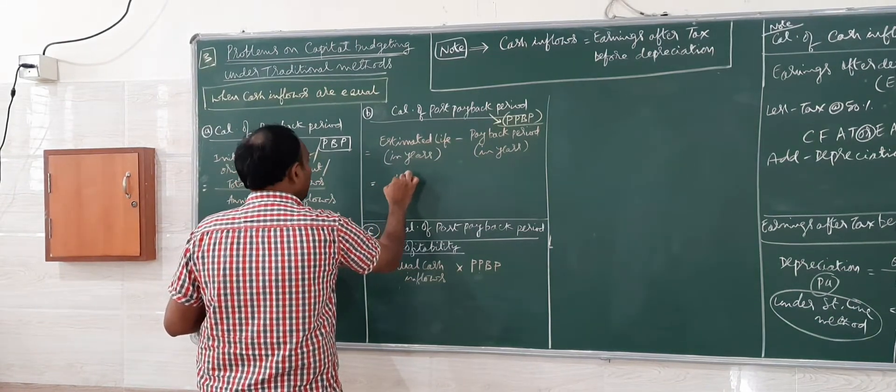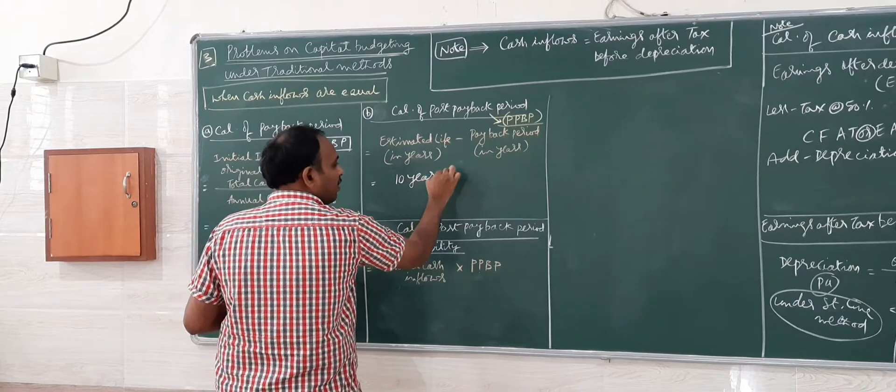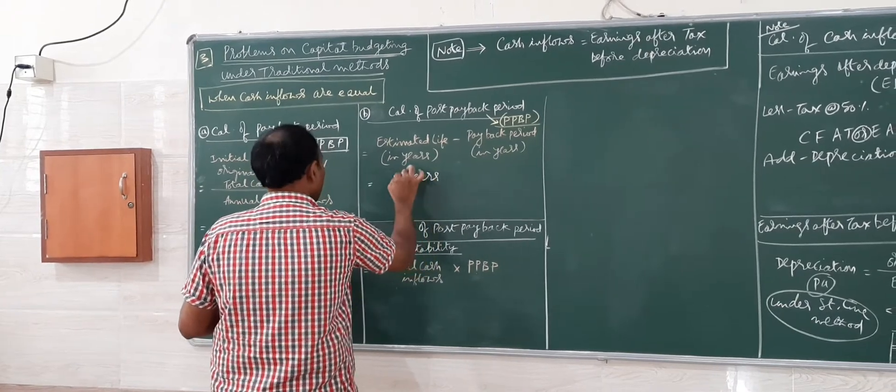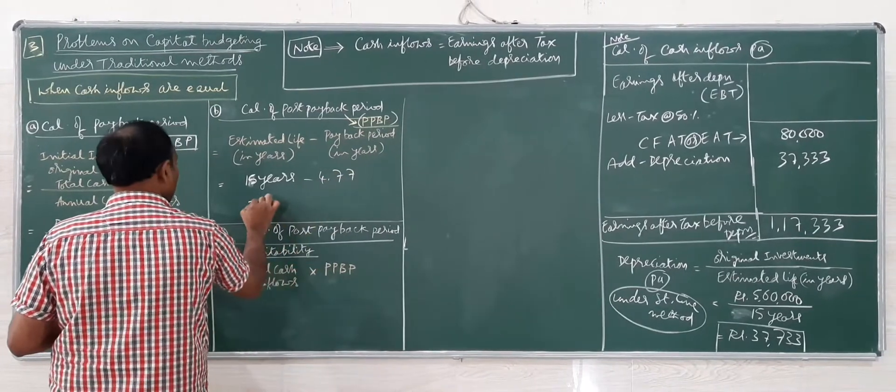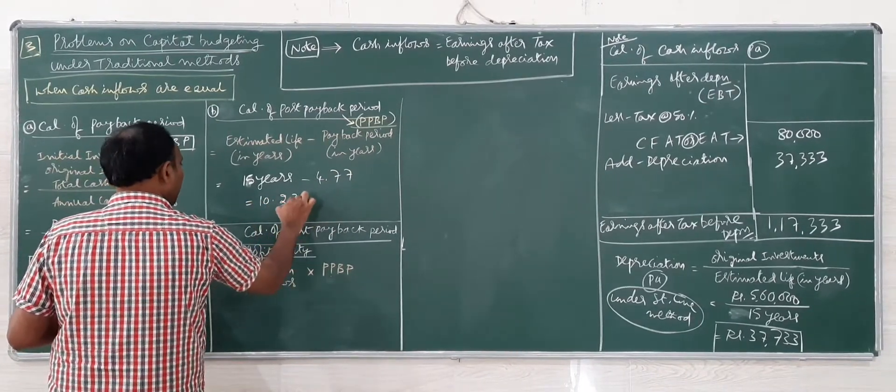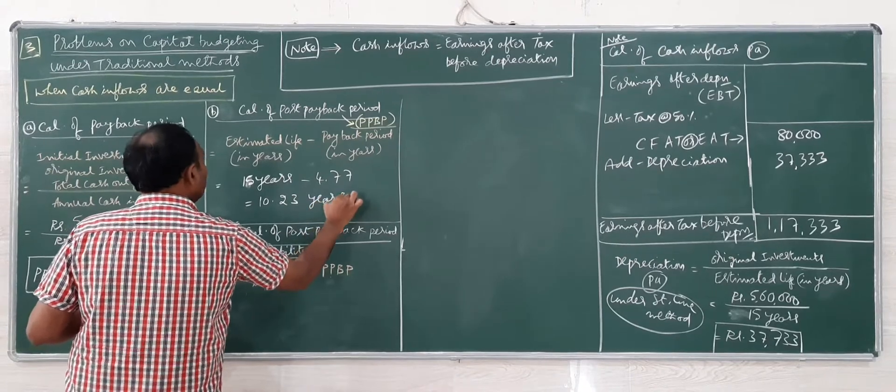Estimated life is 15 years, payback period is 4.77 years, so post-payback period comes to 10.23 years.